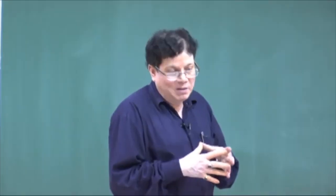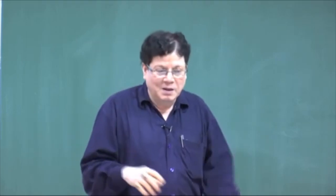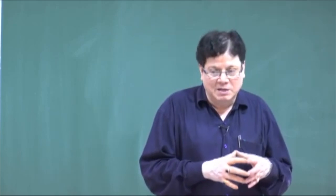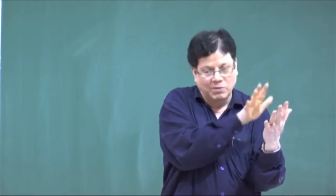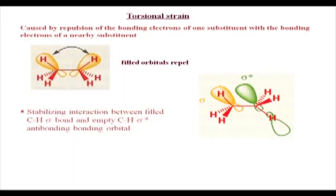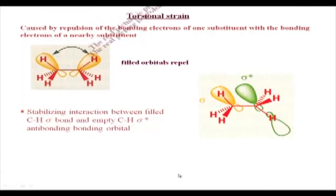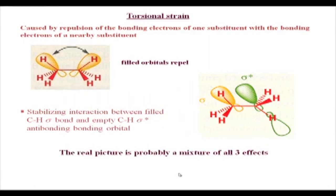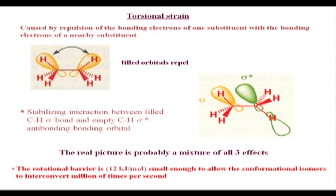So what we have learned: in the eclipsed form there is a small steric interaction when hydrogens eclipse each other — they are small, contributing about 10 percent. The other factor destabilizing the eclipsed form is bond opposition strain — the electrons in the bonds repel each other as negative charges falling on top of each other. And the factor which stabilizes the staggered form is sigma C-H donating into the sigma star C-H of the anti C-H in the adjacent carbon. The real picture is probably a mixture of all three effects, and the total energy barrier is about 3 kilocalories per mole.